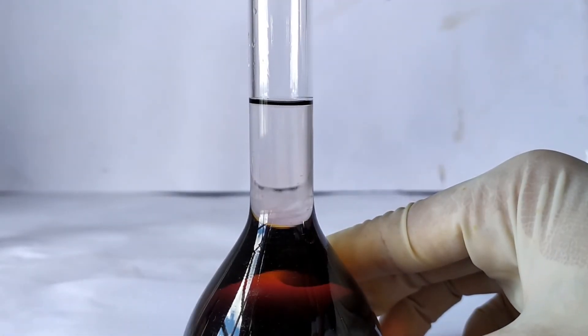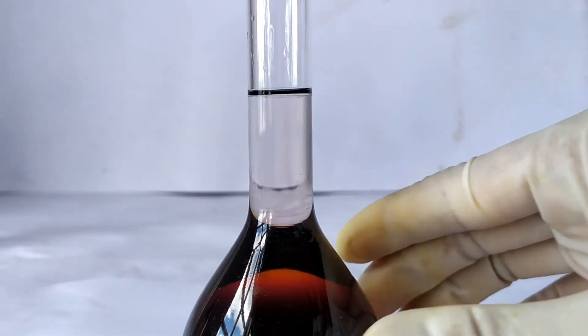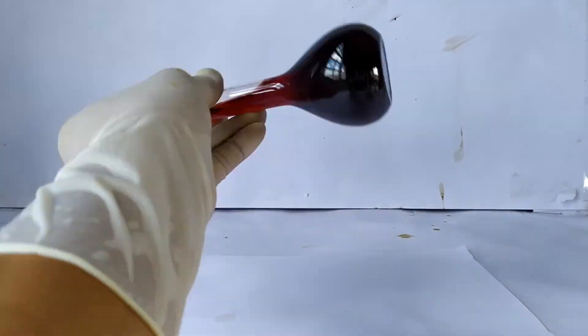Now make up the volume in the flask to exactly 100 ml using the same solvent used to dissolve the alpha naphthol. Stopper the flask and invert it several times to homogenize the solution.